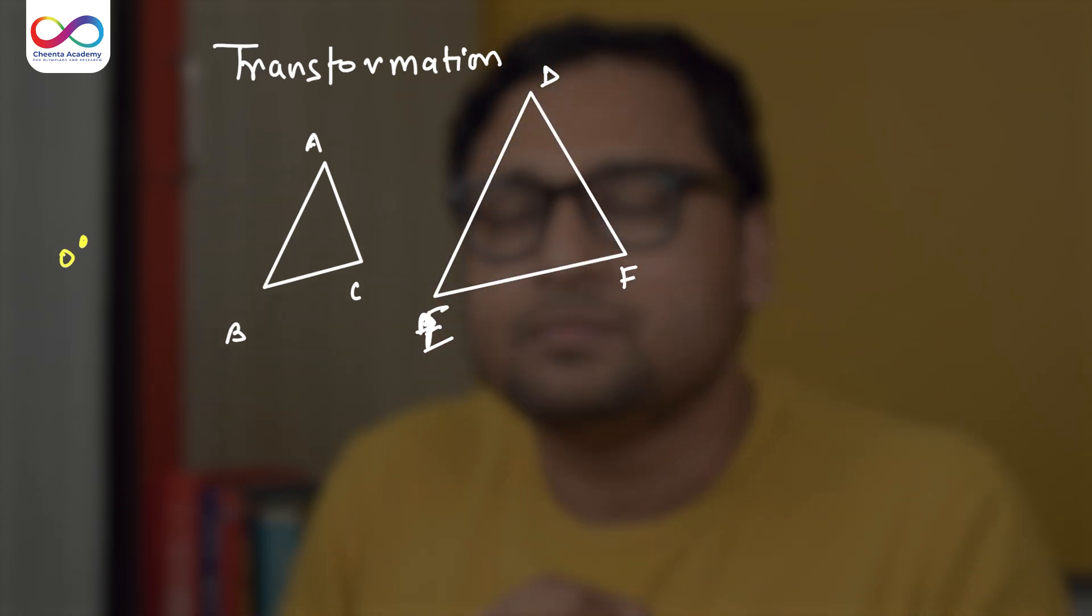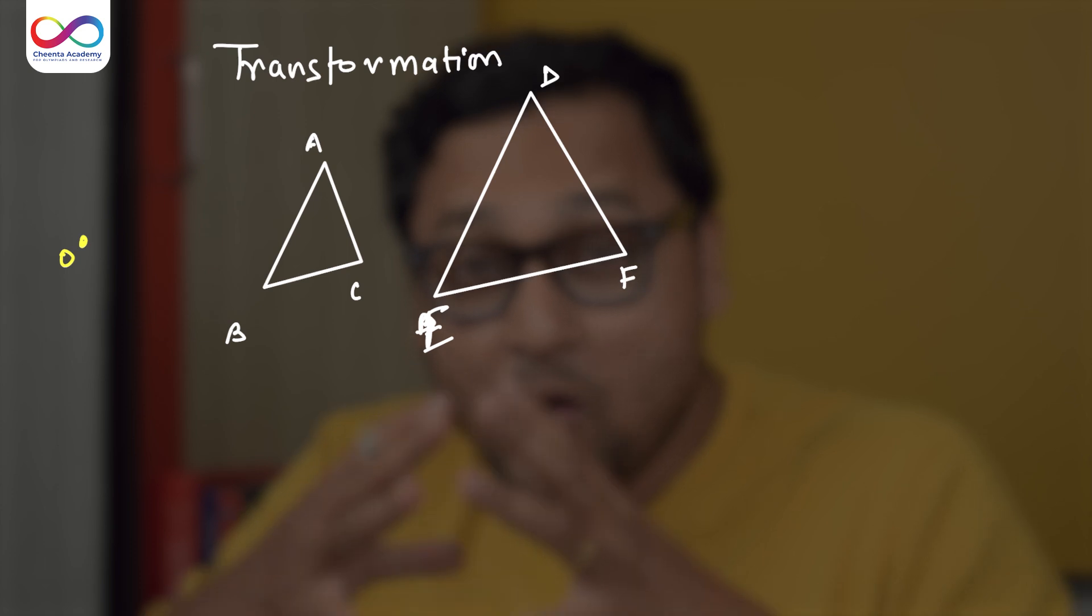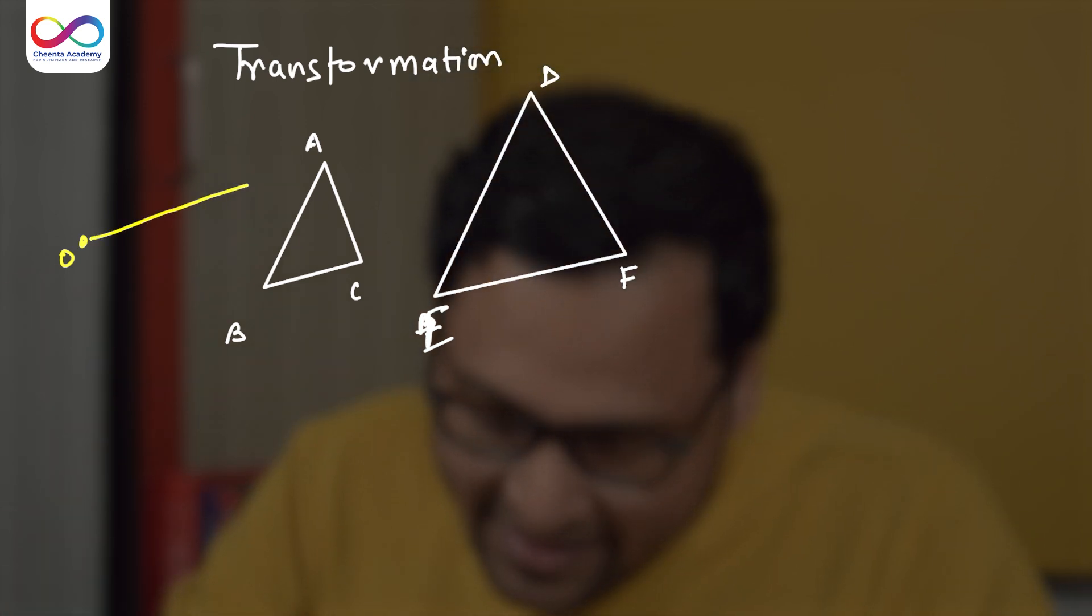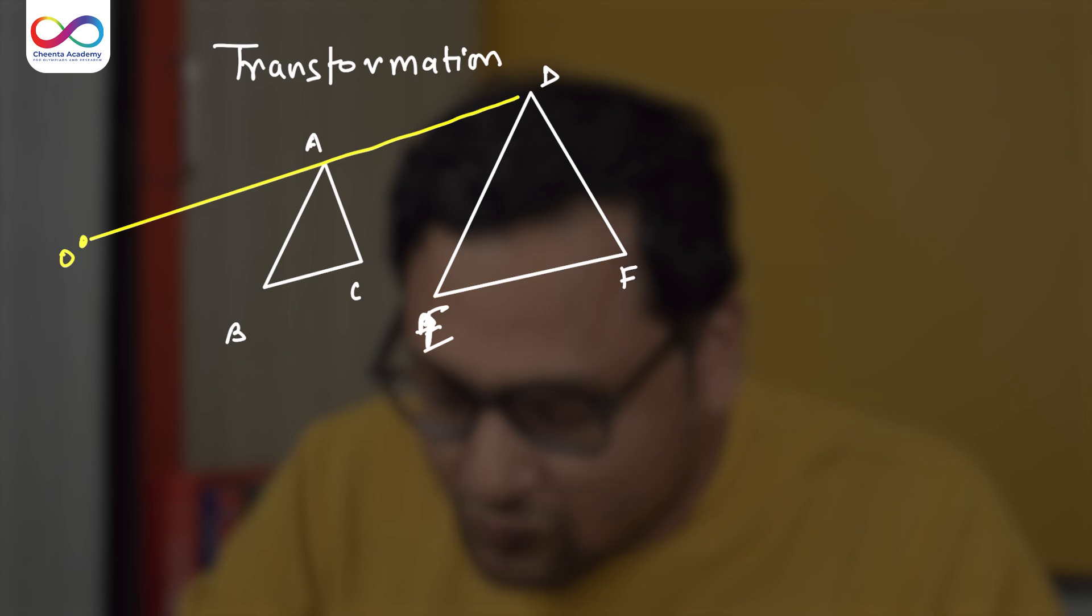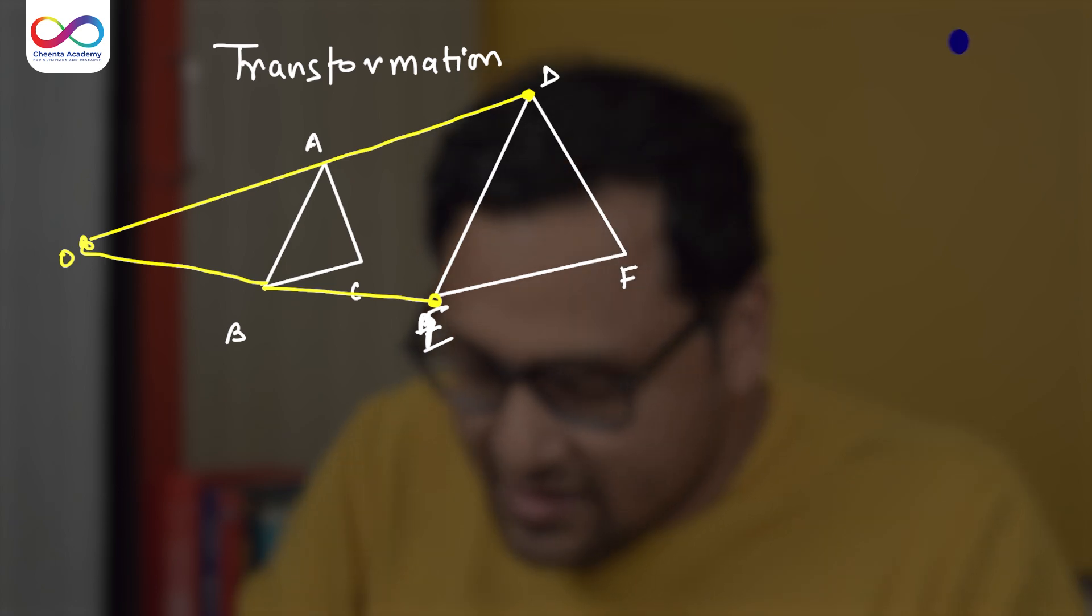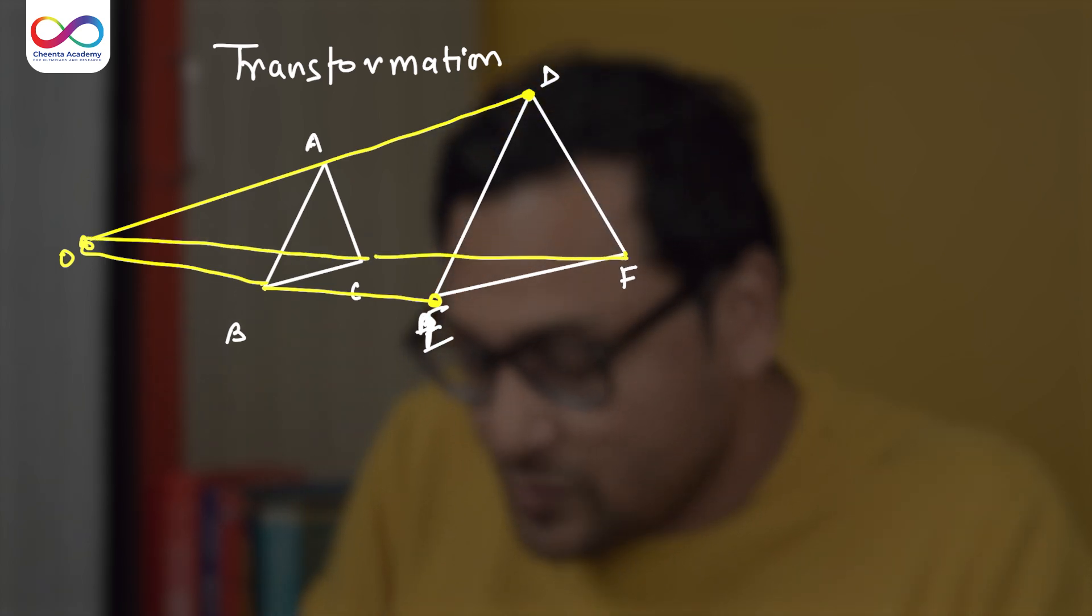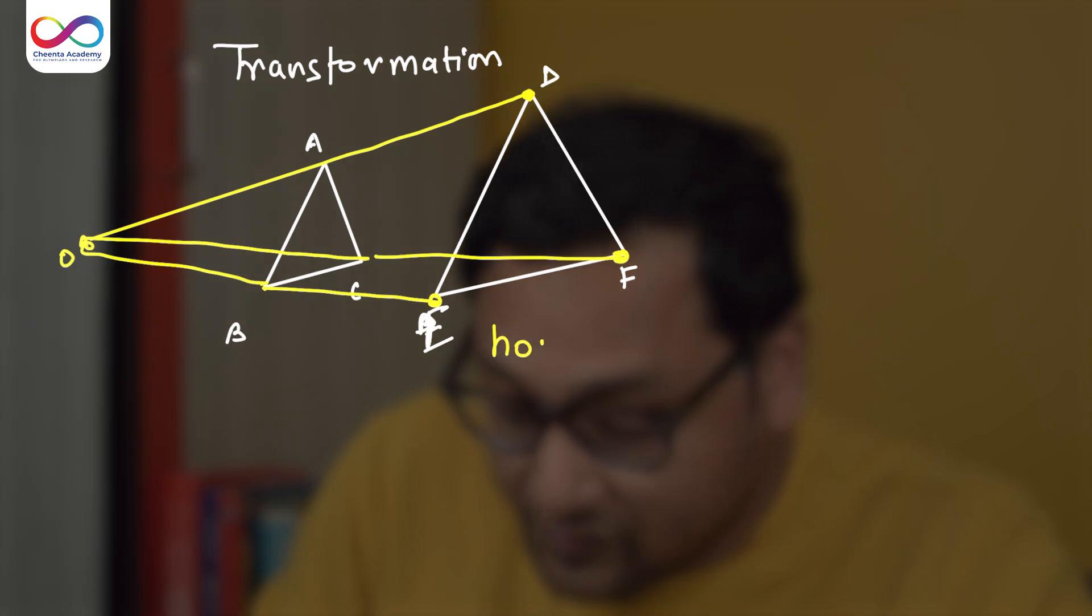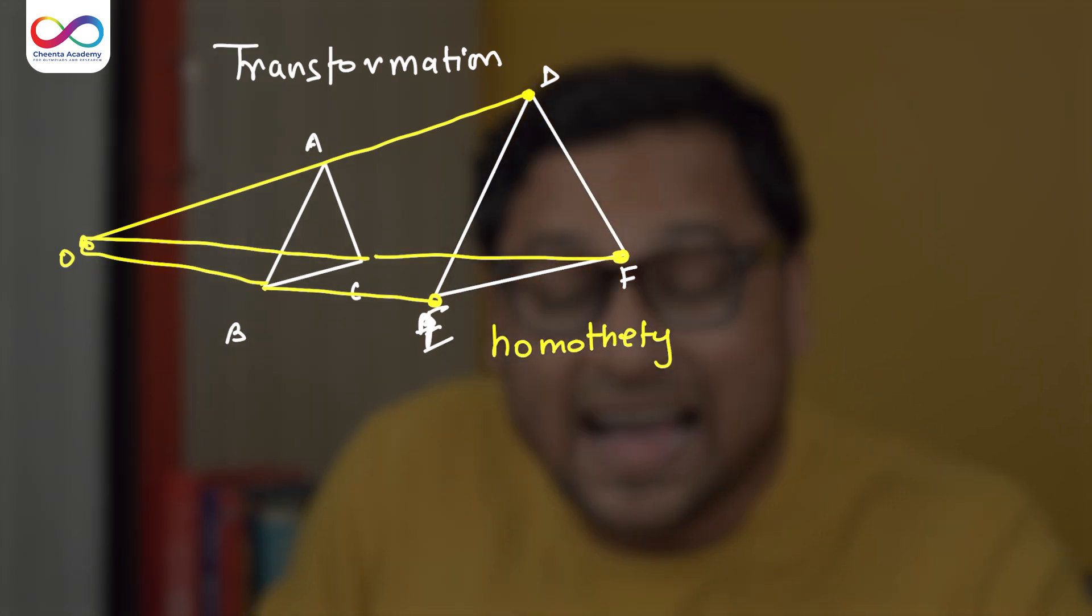There is a point, which is sometimes known as the center of blowing things up. So OA, you extend it and it goes to D, maybe. OB, you extend it and it goes to E. OC, you extend it, it goes to F. So in a way, in your mind, this is something you have to train your mind to think about it like this, that if you have two similar triangles, what I have done here, I found a point O, so that I can blow up one triangle and make it into another one. This is sometimes known as homothety, this particular transformation, or dilation.